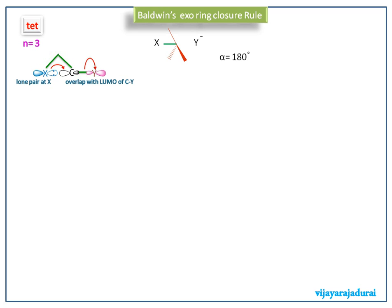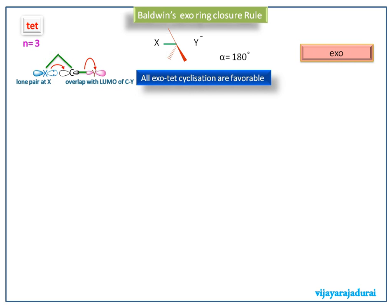All Tet molecules will have a similar structure, so they will have good ring closure reactions. So all Tet cyclizations are favorable.